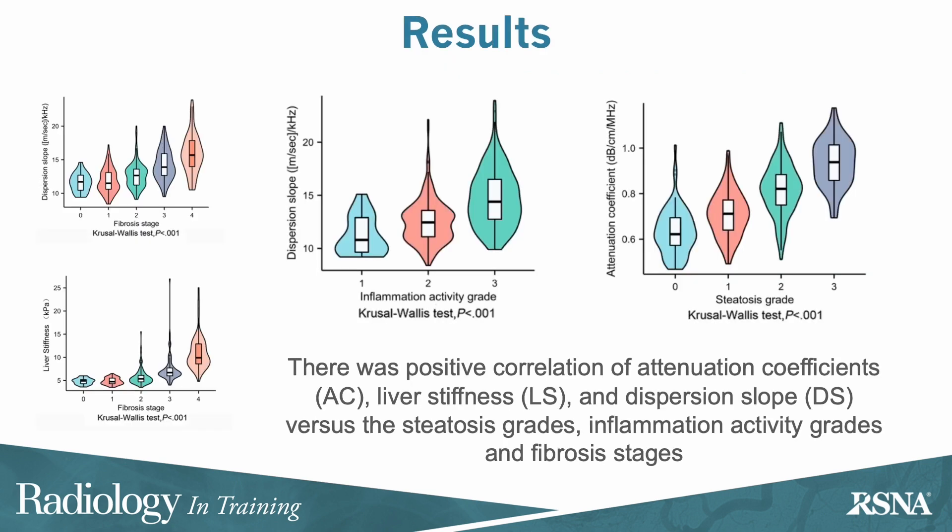There was a positive correlation of attenuation coefficients, liver stiffness, and dispersion slopes versus the steatotic grades, inflammation activity grades, and fibrosis stages, respectively.